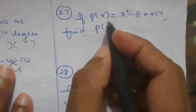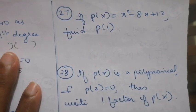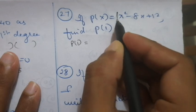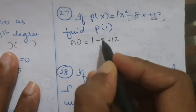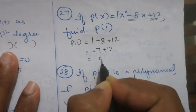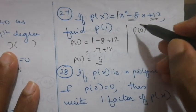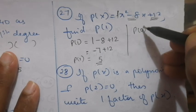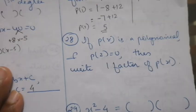Simple question: given p of x, find p of 1. When p of 1 is asked, just take all the coefficients and constant with their signs and add. For example: 1 minus 8 plus 12. So 1 minus 8 is minus 7, plus 12 gives 5. For p of 0, just write the constant term as it is — if it is plus 12, write plus 12.